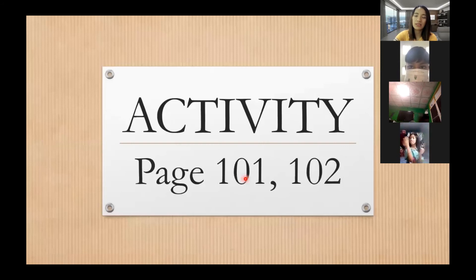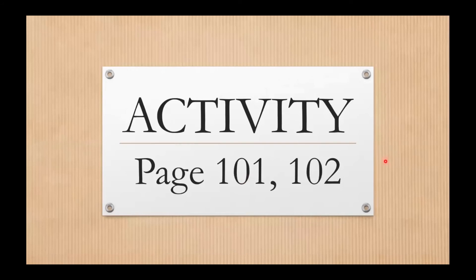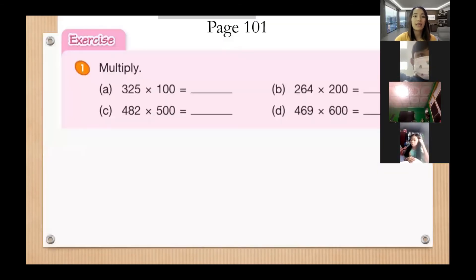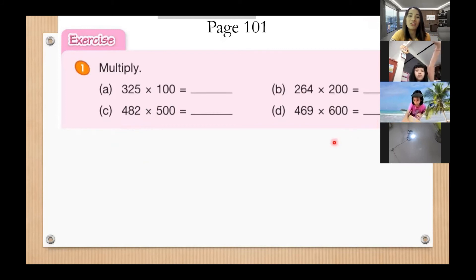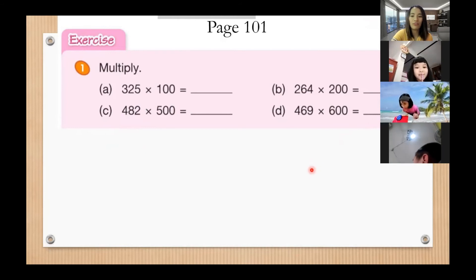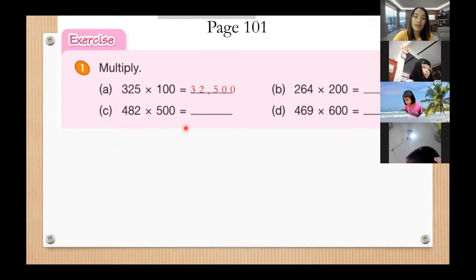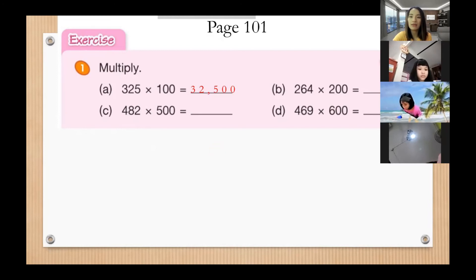Let's move on to the activity. Open your books on page one hundred and one, number one. It says multiply: letter A, three hundred twenty-five times one hundred; letter B, two hundred sixty-four times two hundred; letter C, four hundred eighty-two times five hundred; and letter D, four hundred sixty-nine times six hundred. EQ girl, what's your answer?